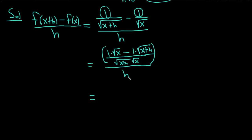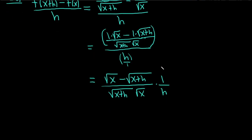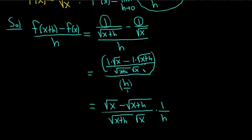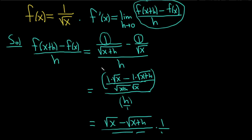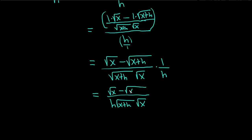When you divide by h, you multiply by the reciprocal. So this becomes: the square root of x minus the square root of x plus h, over the square root of x plus h times the square root of x, multiplied by 1 over h. Plugging in 0 for h right now won't work, so we keep going. Rearranging, we put h in the denominator: h times square root of x plus h times square root of x, with square root of x minus square root of x plus h in the numerator.